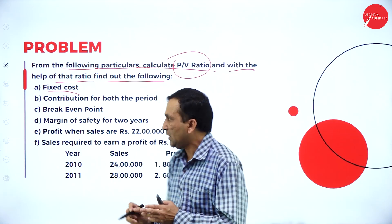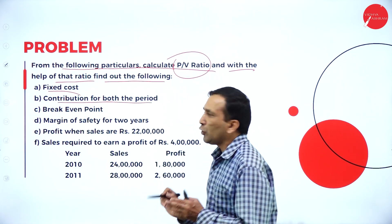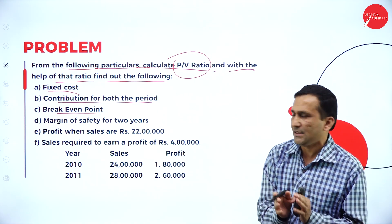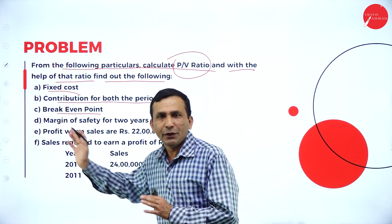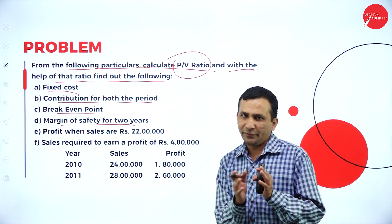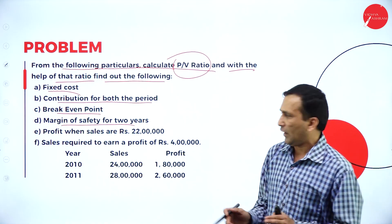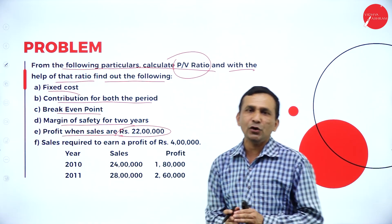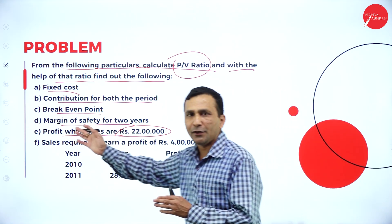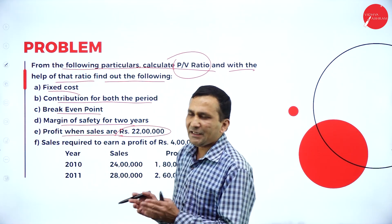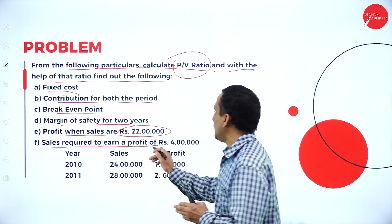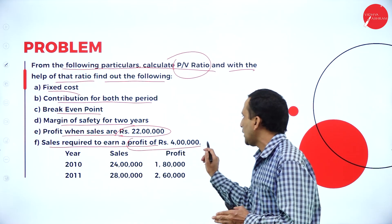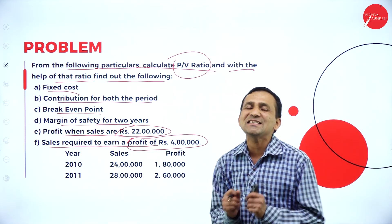We will find out fixed cost and contribution for both periods — the PV ratio formula is applicable for sales, not for units. We will also find out the margin of safety for two years using a different formula, the profit when sales are 22 lakhs, and the sales required to earn a desired profit of four lakhs.